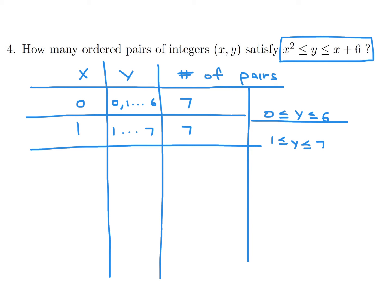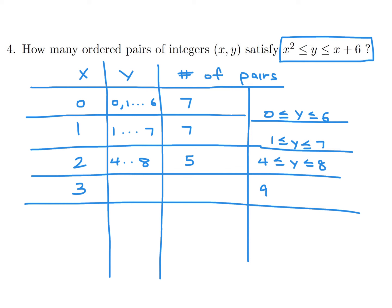When x is 2, we get 4 less than or equal to y less than or equal to 8, so y is 4 through 8 — that's 5 numbers. For x equals 3, it becomes 9 less than or equal to y less than or equal to 9, so this is just y equals 9 — only 1 pair.